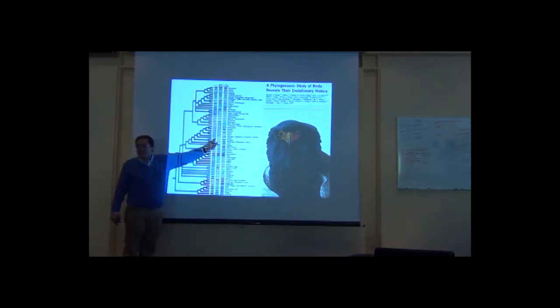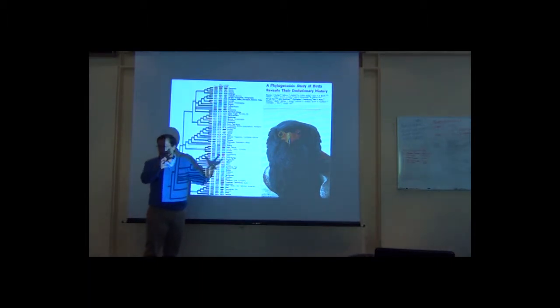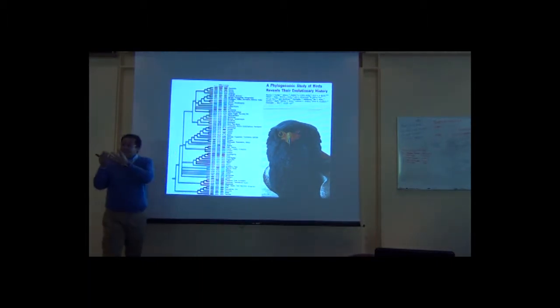Family Ciconiidae means that the group of species belong to that share a common ancestor. Order Falconiformes, whatever, doesn't happen that clear with species.